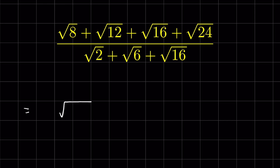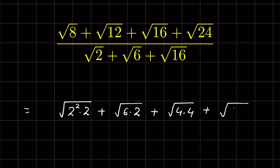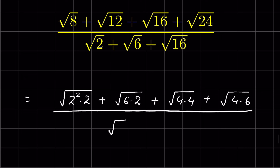Square root of 8 we can write as 2 squared times 2 under square root, plus square root of 12 as 6 times 2 under square root, plus 16 as 4 times 4 under square root, plus 24 as 4 times 6 under square root, upon square root of 2 plus square root of 6 plus square root of 16 as 4 times 4 under square root.